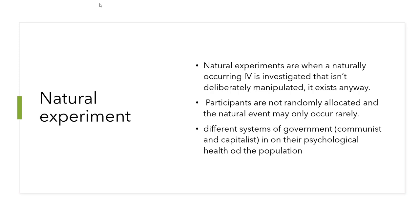Natural experiments involve a naturally occurring IV that isn't deliberately manipulated — it already exists. Participants are not randomly allocated and natural events may occur rarely. For example, you might examine different government systems — communism versus capitalism — and how that affects the psychological health of the population, asking whether there are more depressed people in one system versus another.